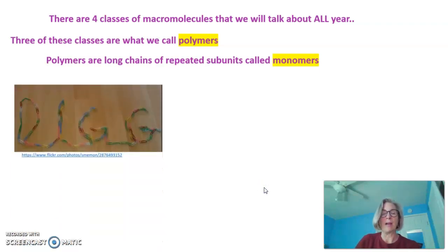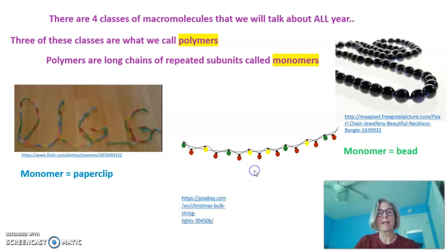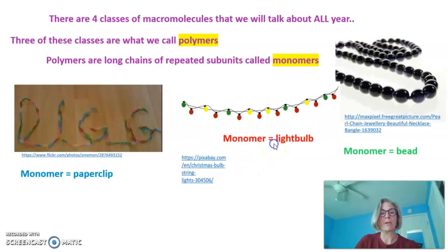This is an example of a polymer. The monomer of this polymer is a paperclip. Another example of a polymer is pictured here, and the monomer of this polymer is a bead. Finally, the last example of this polymer, the monomer is a light bulb.